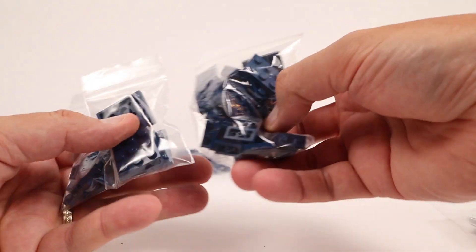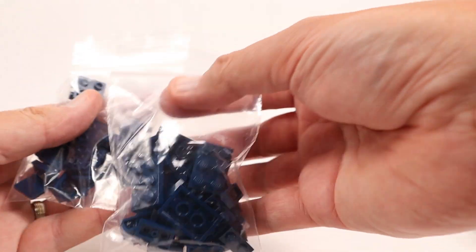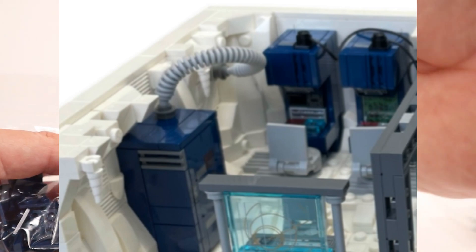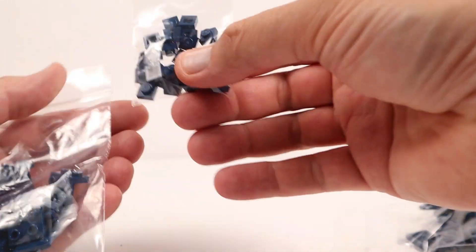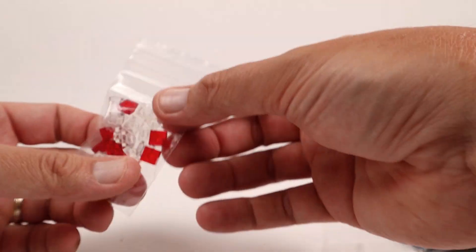More dark blue pieces. Again, all for various Hoth control modules and panels and all that good stuff. Some of these are three by threes, two by threes, one by ones, and then some little bracket pieces. And again, all for echo base.